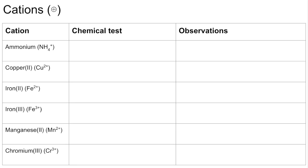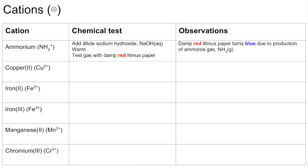Moving on to cations — positively charged ions — same format: chemical test and expected observations. Starting with the ammonium ion: add dilute sodium hydroxide and warm it up, then test any gas produced with damp red litmus paper. The expected observation is that the damp red litmus paper turns blue due to the production of ammonia gas.